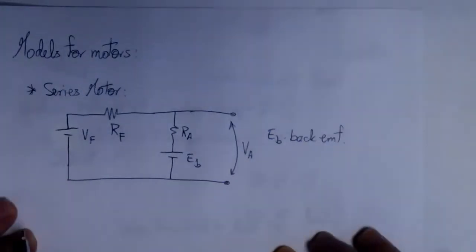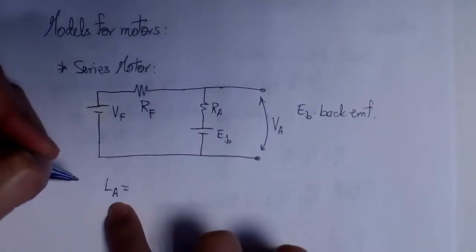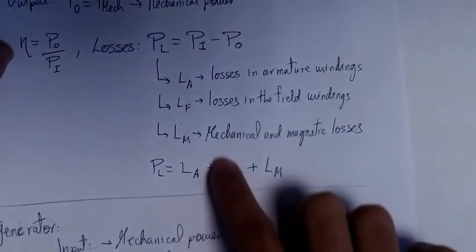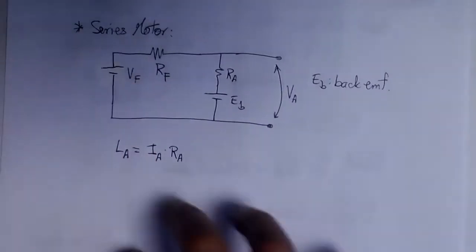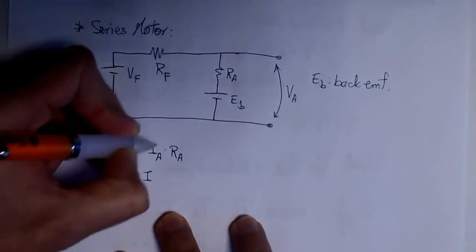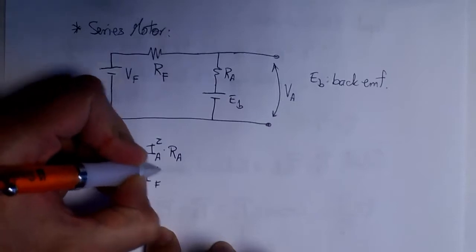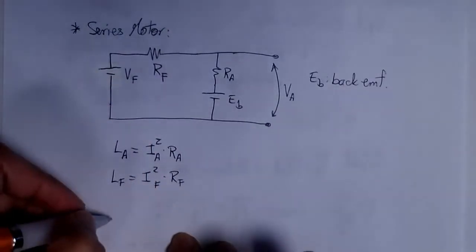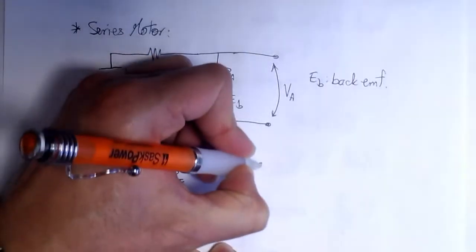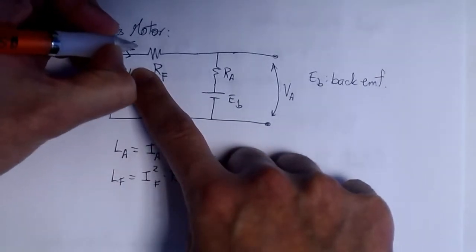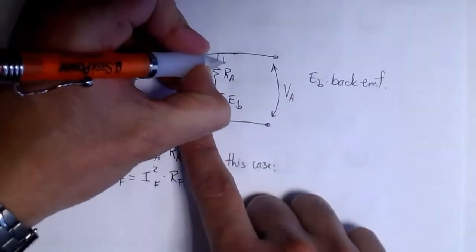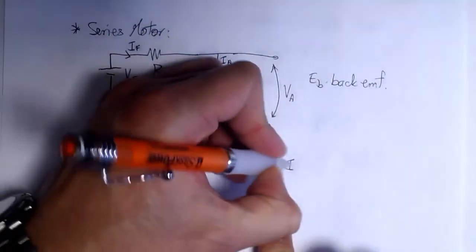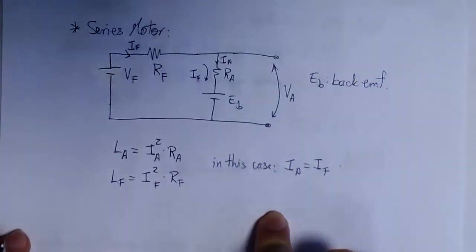We also have the total voltage in the armature windings, and EB is the back EMF. With this model it's easy to compute losses. Losses in the armature windings are given by IA² × RA, and losses in the field windings are IF² × RF. In a series motor, the same current flows through both the field windings and the armature windings because they are connected in series — so IA equals IF. This is only true for this type of motor.